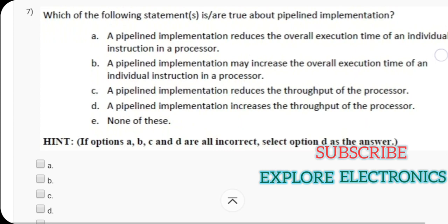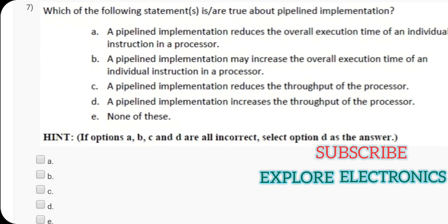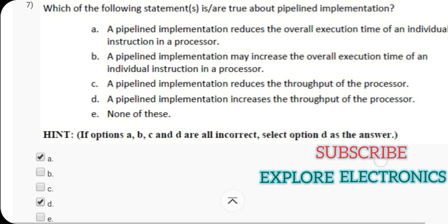And the next seventh question has five multiple answers. Here we need to choose multiple answers. Which of the following statement is true about pipelining or pipelined implementation? With respect to pipelining, a pipelined implementation reduces overall execution time of individual instruction in a processor. Yes it is correct. It reduces overall execution time. And then option D, a pipelined implementation increases the throughput of the processor. Because of reduction in the time required it increases the throughput. That is why answer is D. This is how we can solve 1 to 7 questions.